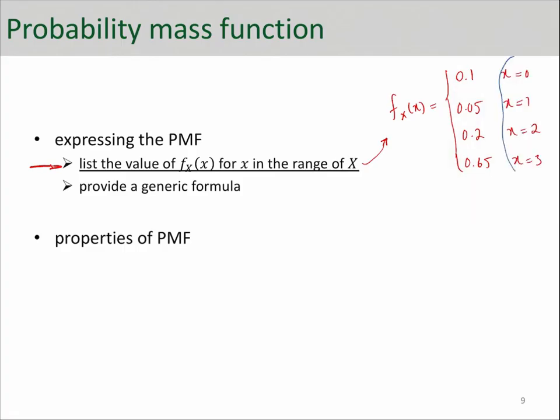These are all the little x values, basically the numbers that can go in here, and these are the probabilities. In other words, this one is probability of X being equal to 0, or f_X at point 0. Similarly, this is probability of X being equal to 3, or f_X at point 3.